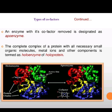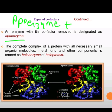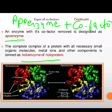A protein part of an enzyme without its non-protein part is known as apoenzyme. So enzymes are made up of two things: apoenzyme, which is the protein part, and the cofactor, which is the non-protein part. Apoenzyme plus cofactor together make the holoenzyme — a complete, fully functional enzyme.